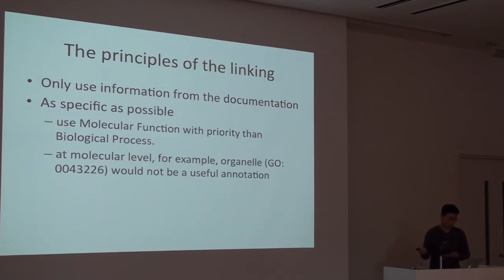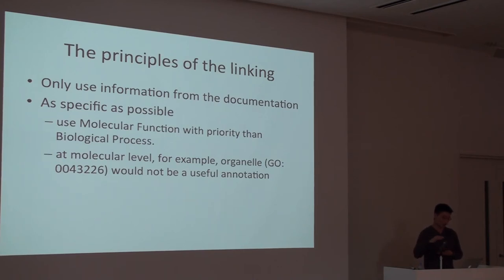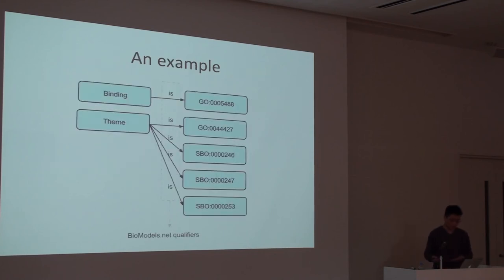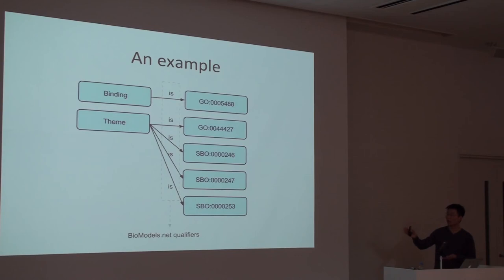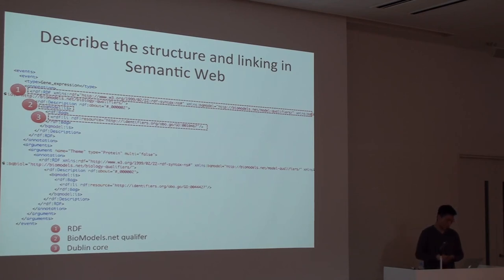The second principle is we try to annotate as specifically as possible based on the information available from the documentation. We especially use ontological classes from molecular function rather than biological processes, and we try to annotate those at the molecular level — for example, an organelle-level annotation wouldn't be very useful. For binding, we annotate with GO ontology and SBO terms, and we use BioModels.net qualifiers to specify the nature of the relationships. The annotations are encoded in RDF in combination with BioModels.net qualifiers and Dublin Core.